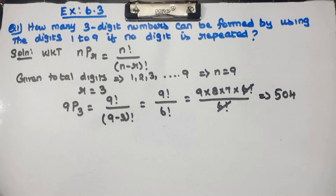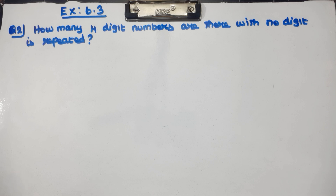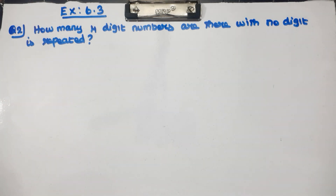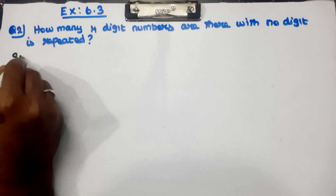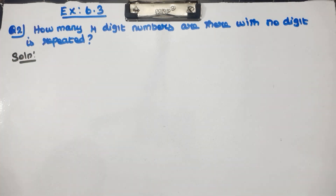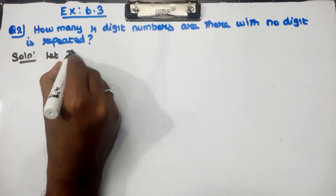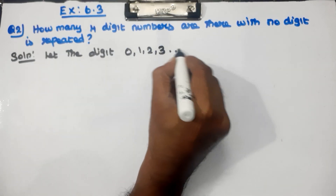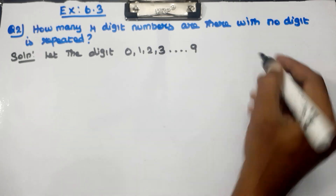Next, question number 2: How many 4-digit numbers are there with no digit repeated? You can see the digits here. This is very easy. First of all, how many digits are we going to use? The digits are 1, 2, 3, up to 9. We will fill out these 4 digit places.